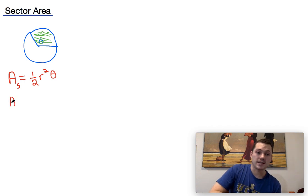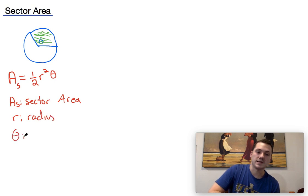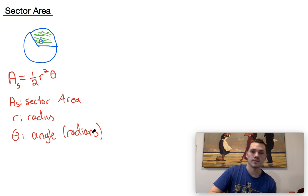And what we know is that A sub s is sector area, r is the radius, and theta is the angle given in radians. Okay, so that's one of the methods that you can use to solve it.